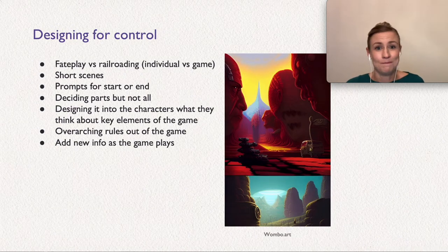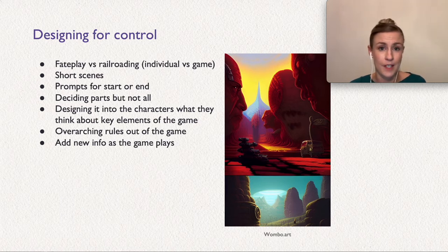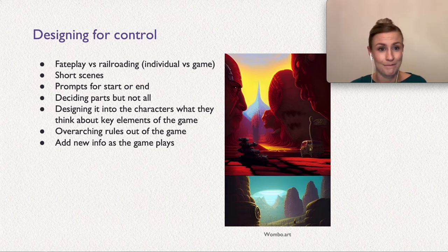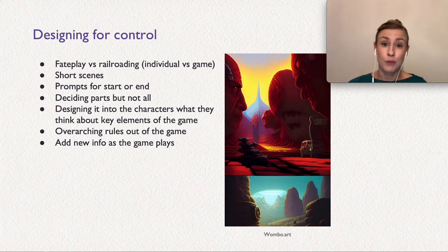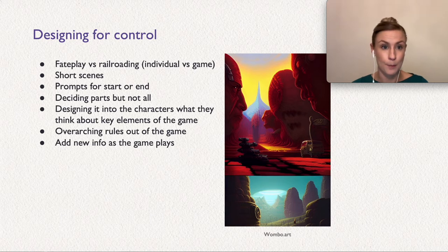Designing for control: we talked in the previous course about how it's possible to design for control and steer what will happen in the game through the design. Now it's time for some examples of how you can do this. I want to start by talking about fate play and railroading, which is almost the same thing on an individual versus a game level. Fate play is when you give each character a fate that the player needs to make sure happens during play.